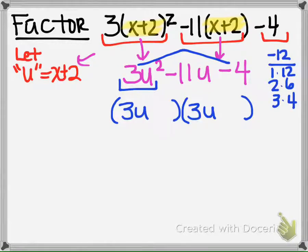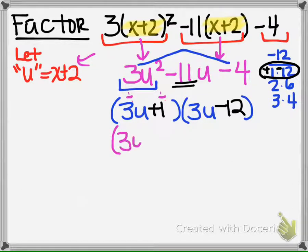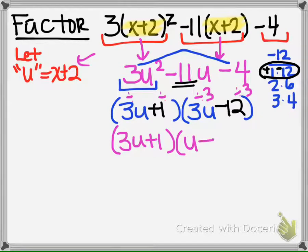We have to pick which numbers would multiply to negative 12, but they have to add to negative 11. So if we pick positive 1 and negative 12, those would add to negative 11 and multiply to negative 12. Then we're going to ask ourselves, is there anything that can be divided into both of those? No, so it's going to stay 3u plus 1. And is there anything that can divide into both of these? Yes, 3. So it will become u minus 4.